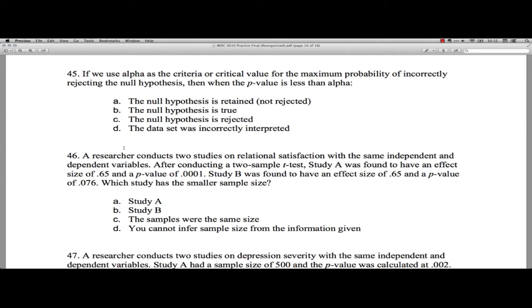This one says, if we use alpha as the criteria or critical value for the maximum probability of incorrectly rejecting the null hypothesis, which is a rather convoluted phrase, then when the p-value is less than alpha...